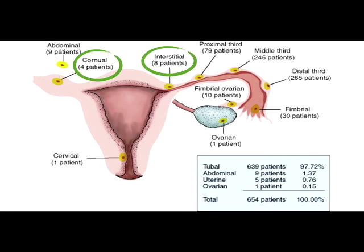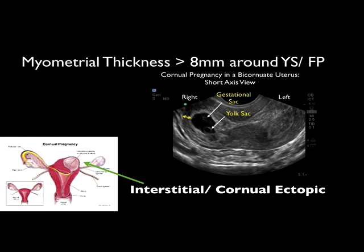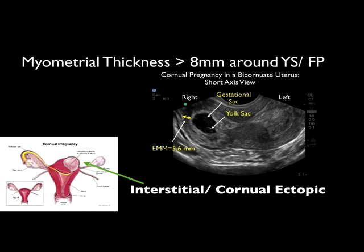One key pitfall is that when you identify an intrauterine pregnancy, you need to make sure the patient does not have an interstitial or corneal ectopic pregnancy. A small proportion of ectopic pregnancies will be in the corneal interstitium of the uterus. These have a very poor prognosis and frequently present with uterine rupture and hemorrhagic shock. The way to identify this on ultrasound is to make sure the intrauterine pregnancy is surrounded by greater than eight millimeters of myometrium. This ultrasound scan shows a gestational sac and yolk sac where measurement of the myometrial thickness is less than eight millimeters, which is very concerning for an interstitial or corneal ectopic pregnancy.